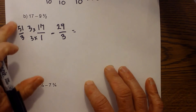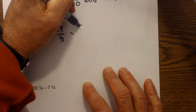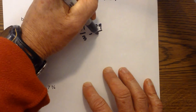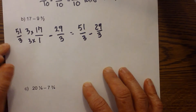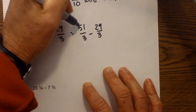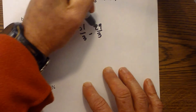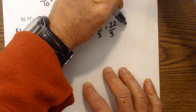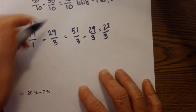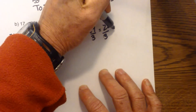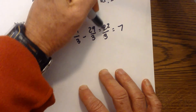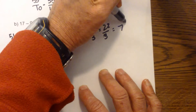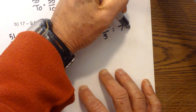The numbers get a little larger. So now we have fifty-one over three minus twenty-nine over three, and you'll see you get the same answer. Fifty-one minus twenty-nine equals twenty-two over three. Three goes into twenty-two seven times with one left over — seven times three is twenty-one and twenty-two minus twenty-one is one — giving seven and one-third.